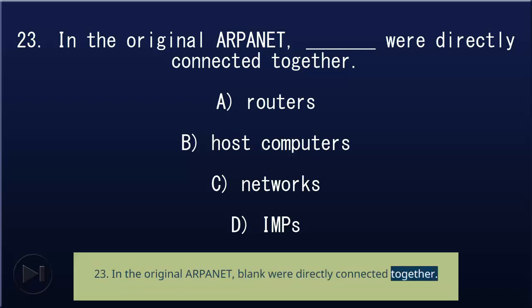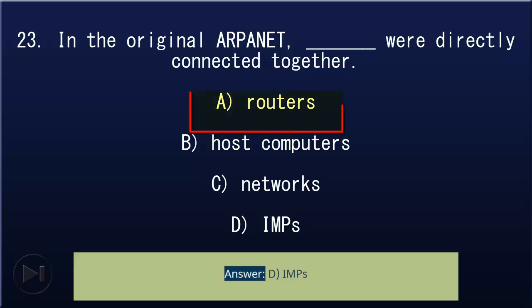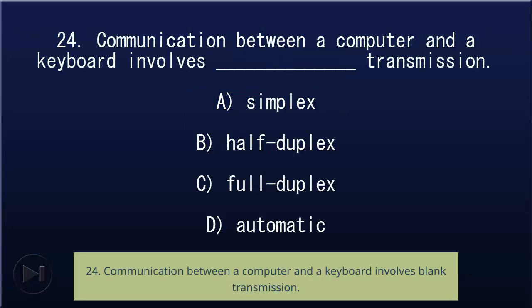23. In the original ARPANET, blank were directly connected together: A) routers, B) host computers, C) networks, D) IMPs. Answer: D, IMPs.